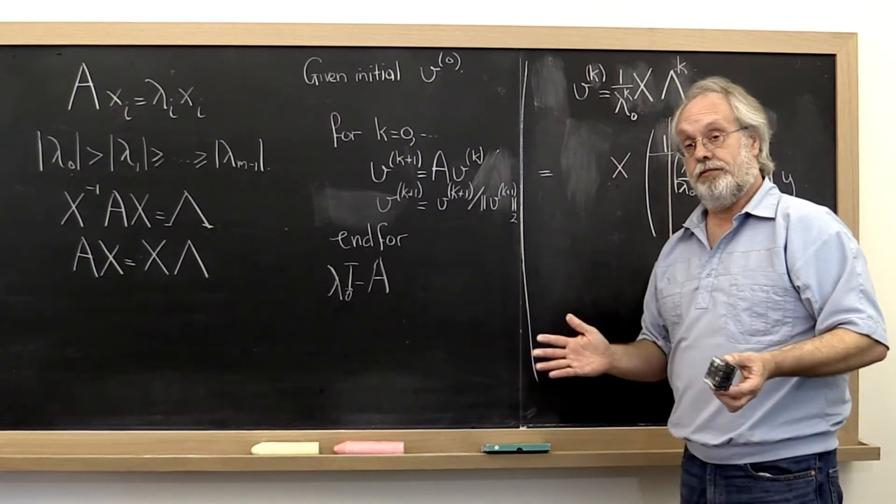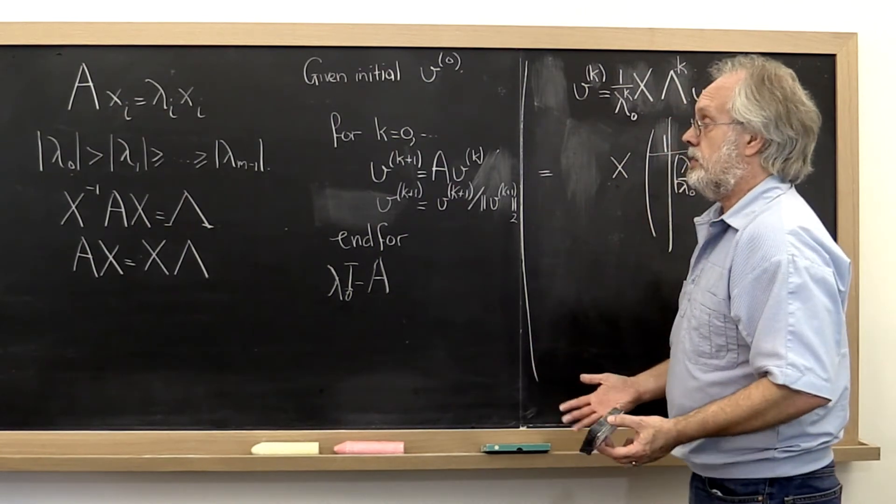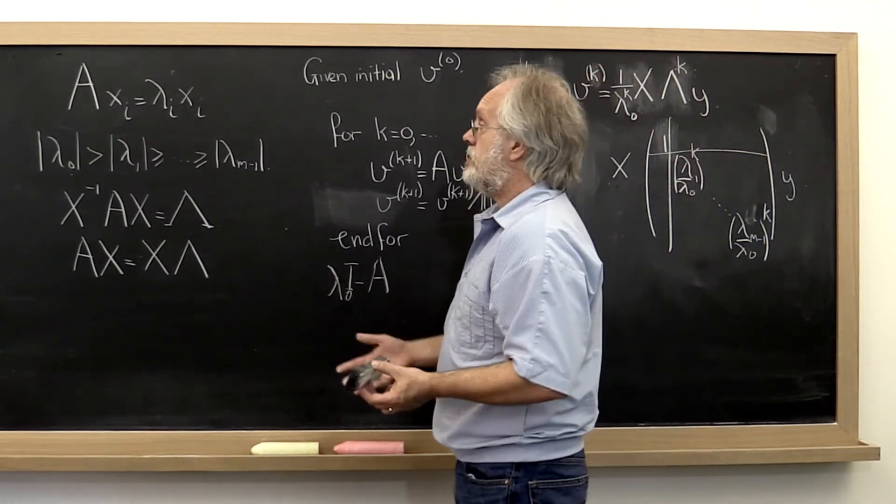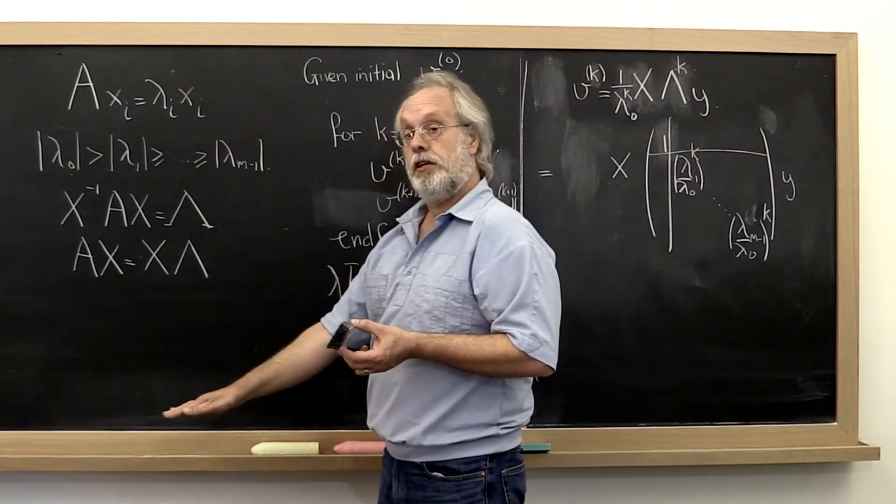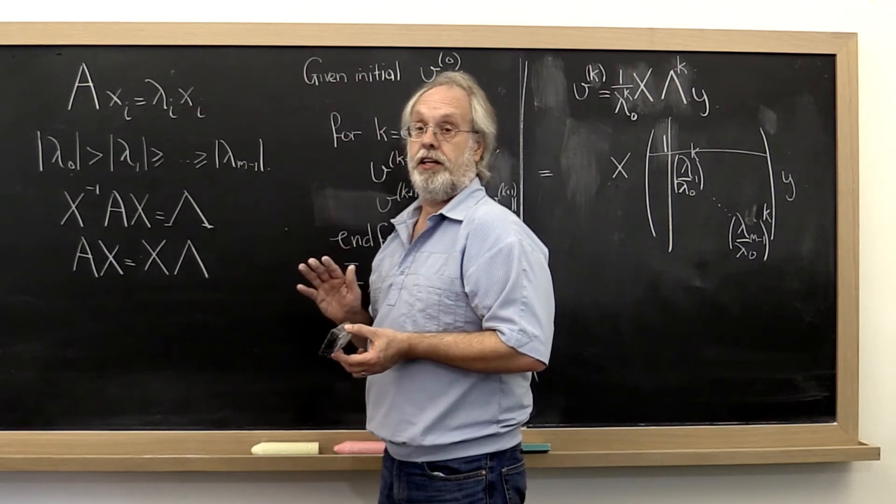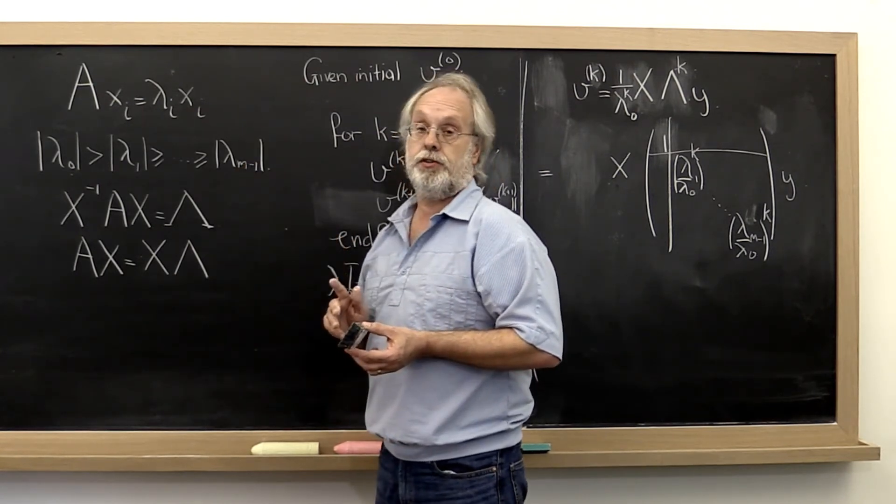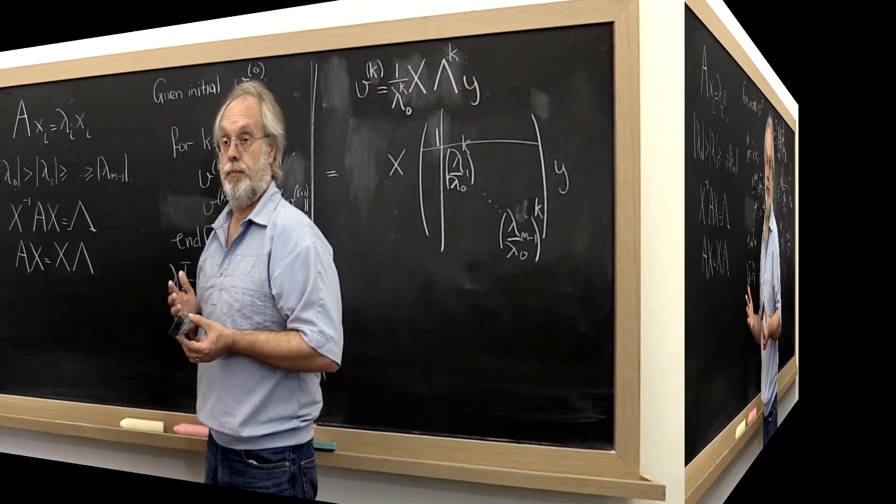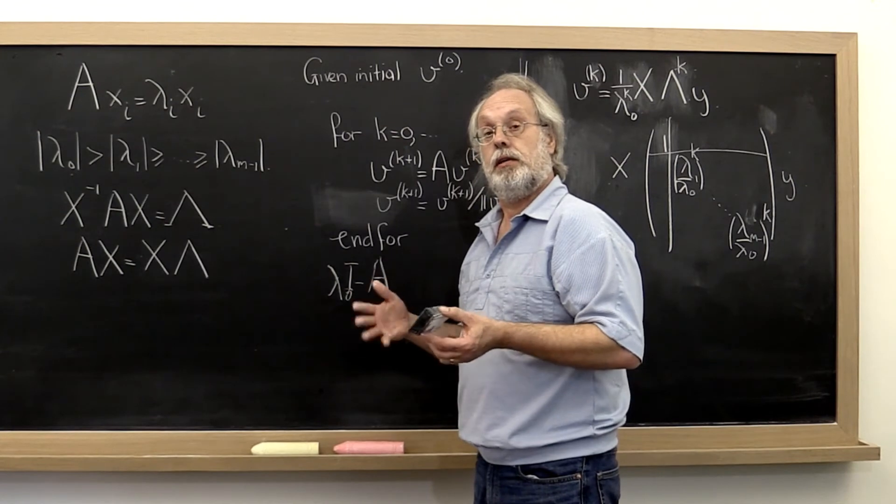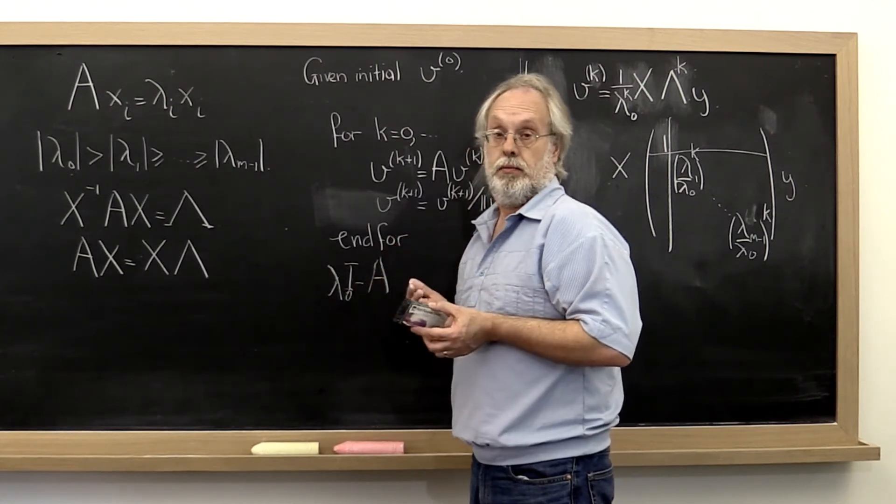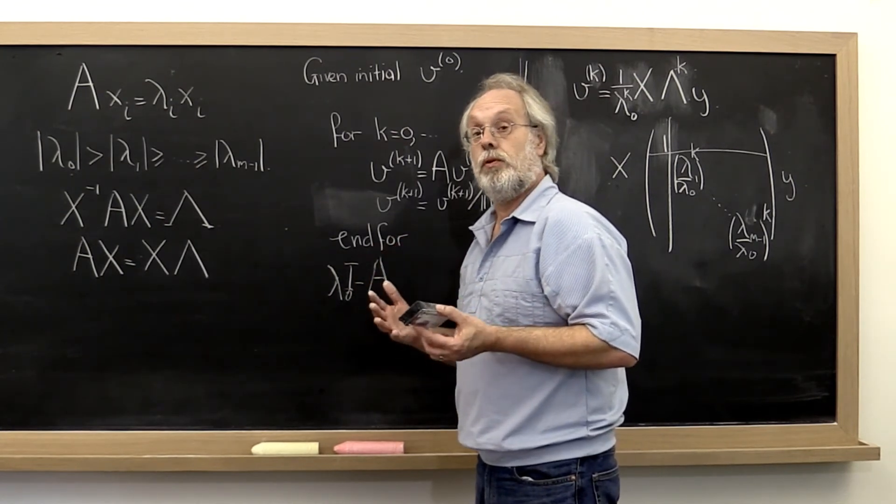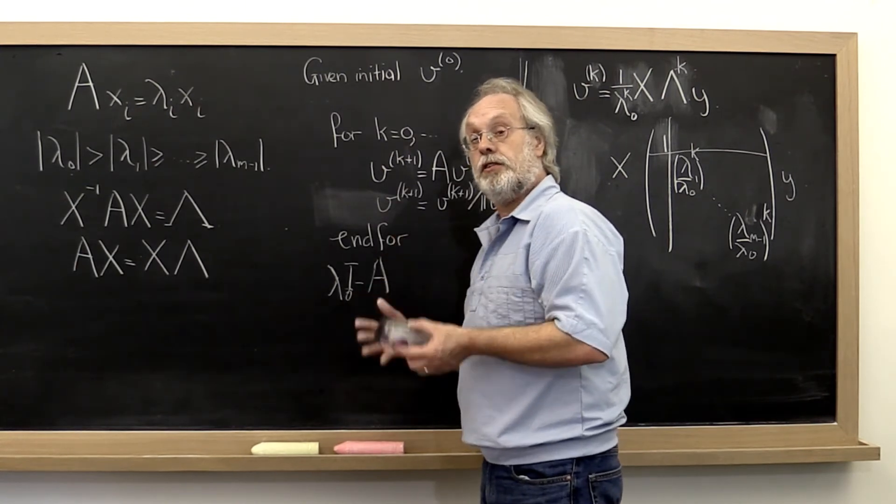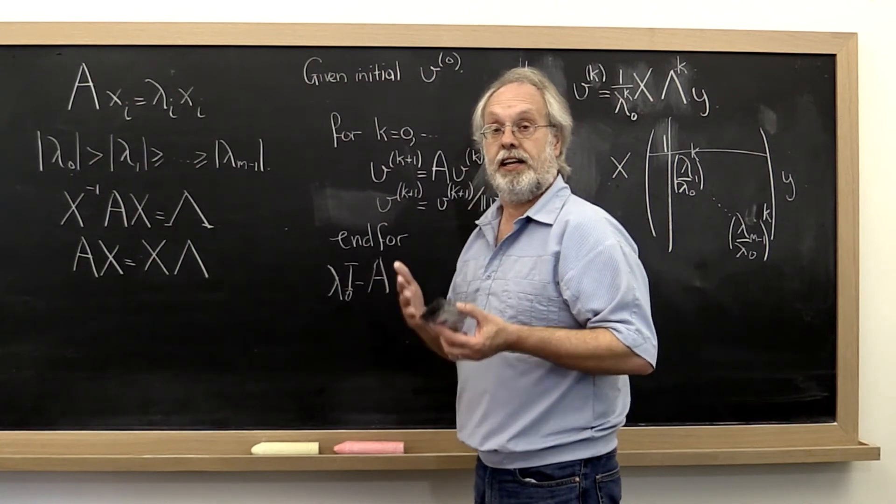What we now have is a method that's practical that gives us a vector that eventually points roughly in the direction of the eigenvector associated with the largest eigenvalue in magnitude. What it doesn't give us yet is an eigenvalue. So what we notice is that it seems to be easier to find a method for finding the eigenvector than to find a method for finding the eigenvalue.